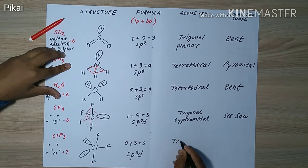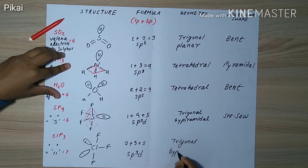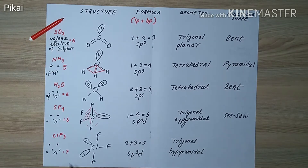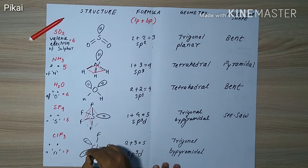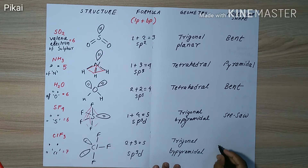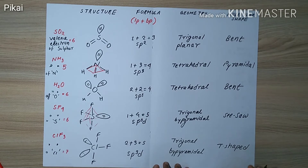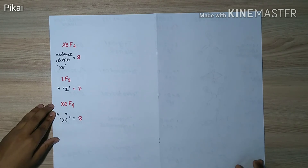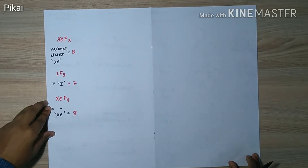The hybridization formula gives two lone pairs plus three bond pairs, which equals five again — sp3d, with one s, three p, and one d. The geometry is trigonal bipyramidal, with one trigonal structure in the middle and pyramids above and below. If we don't consider the lone pairs, the molecular shape is T-shaped.